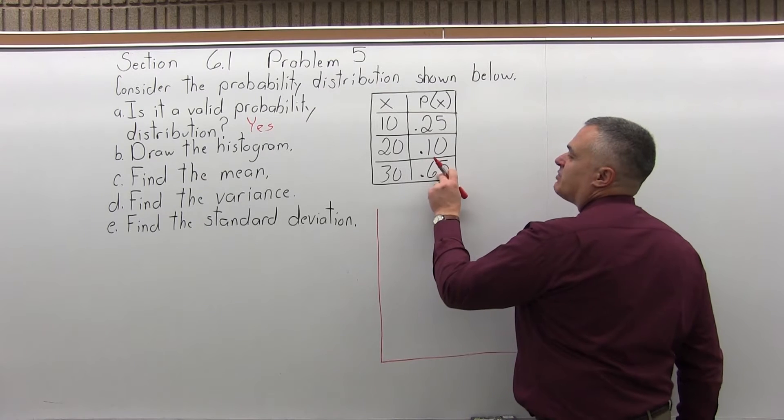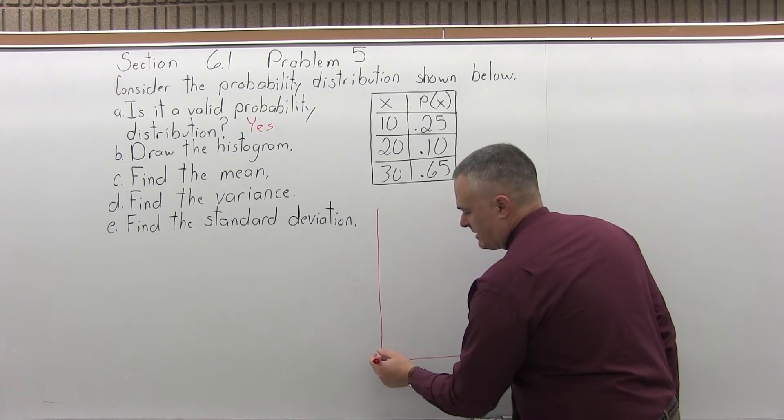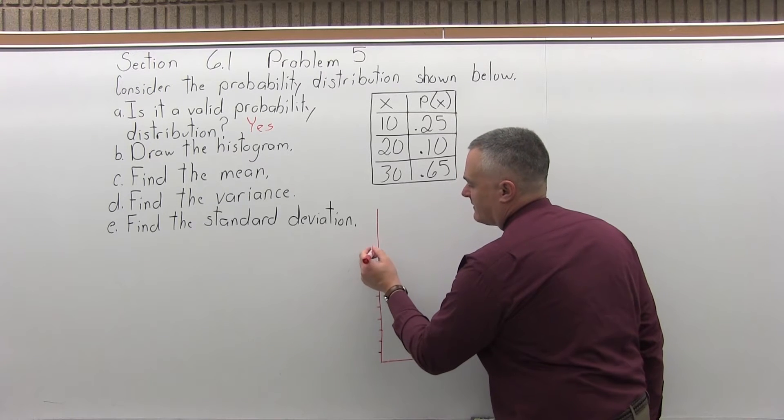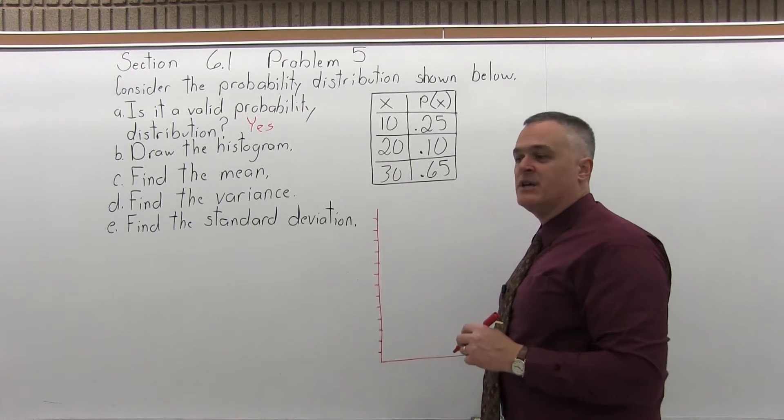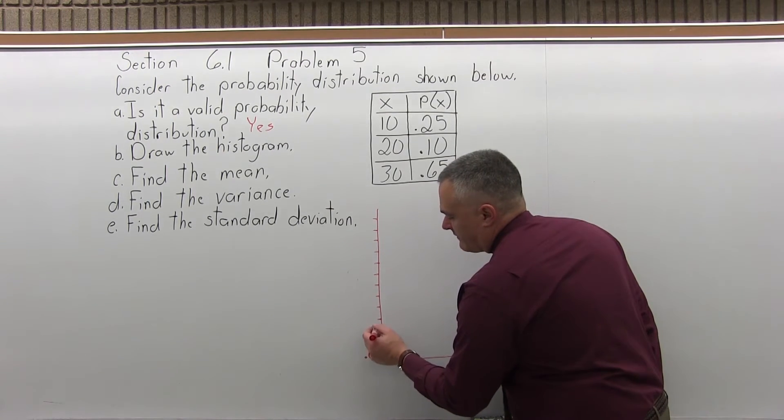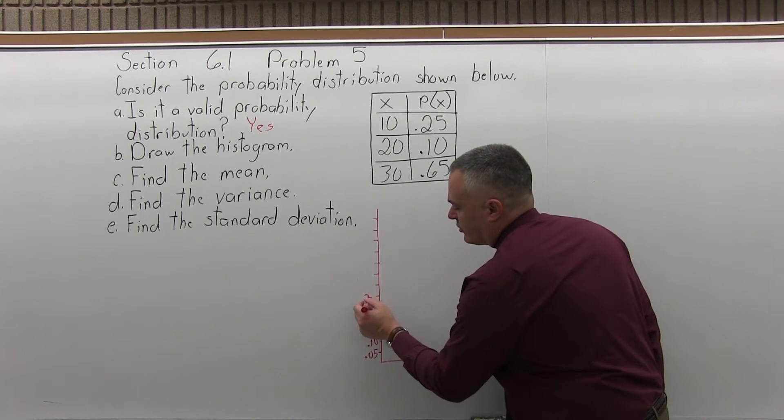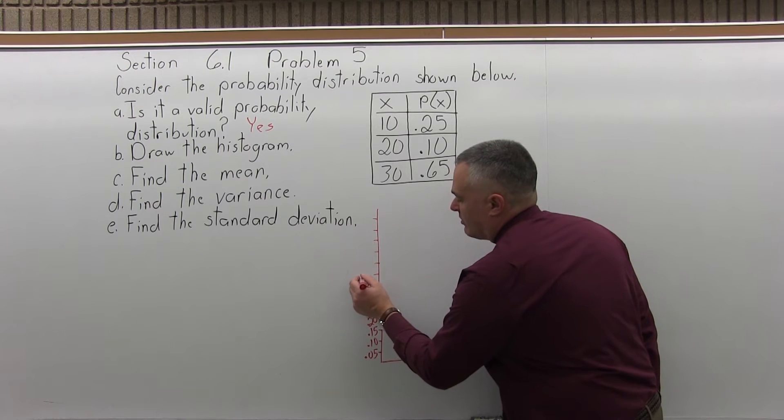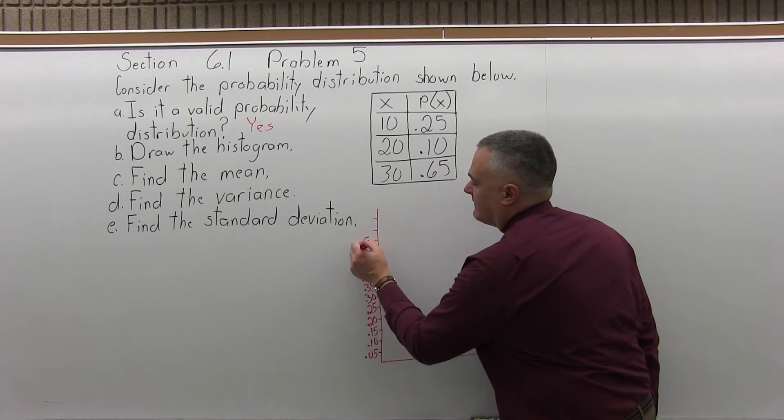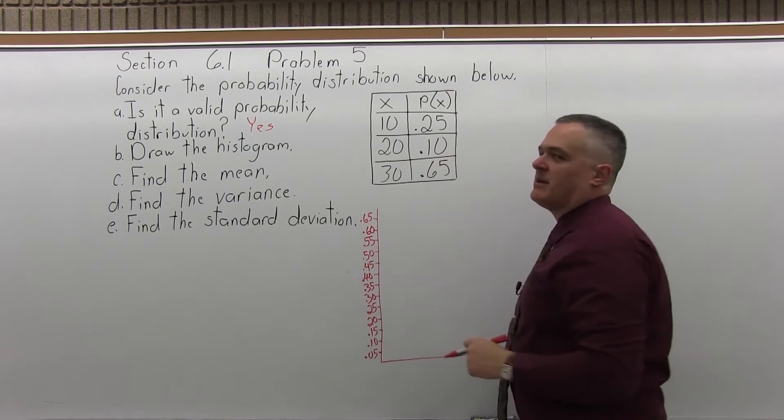So my biggest probability is 0.65. Most of these I run in chunks of 5% until I go up high enough. So this is going to be 5, 10, 15, 20, 25, 30, 35, 40, 45, 50, 55, 60, 65.